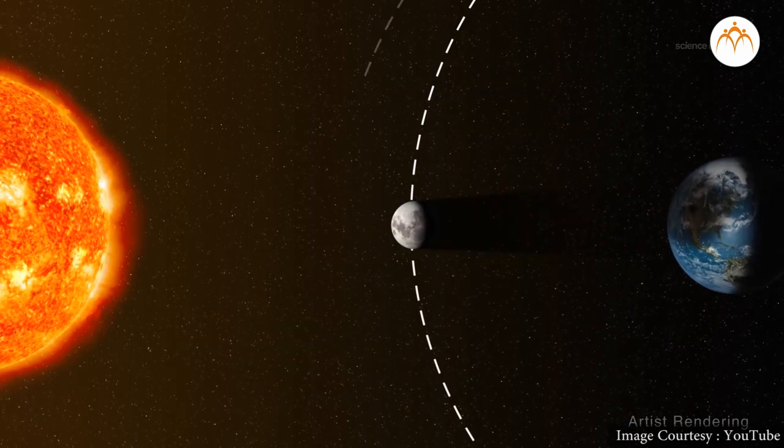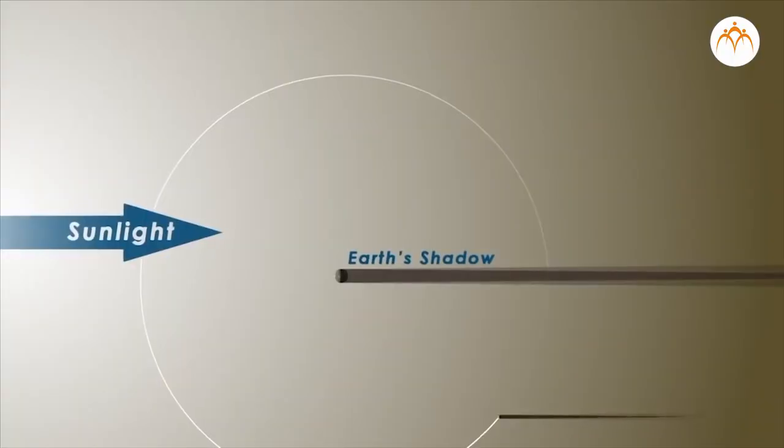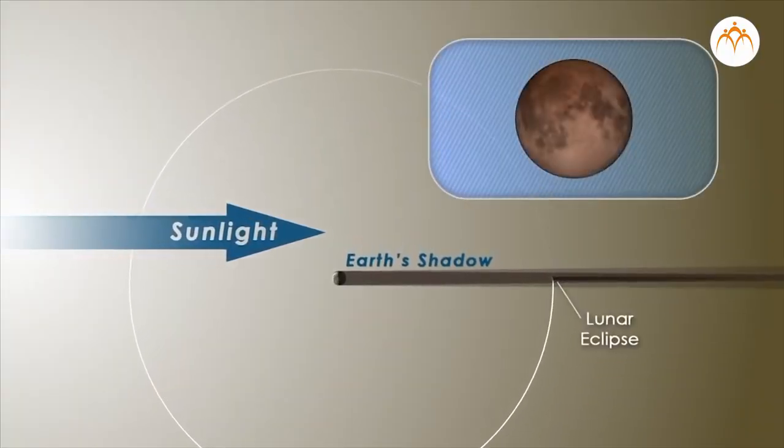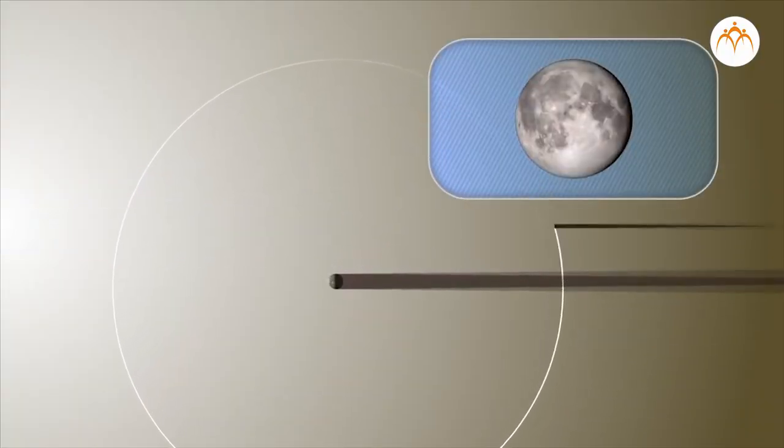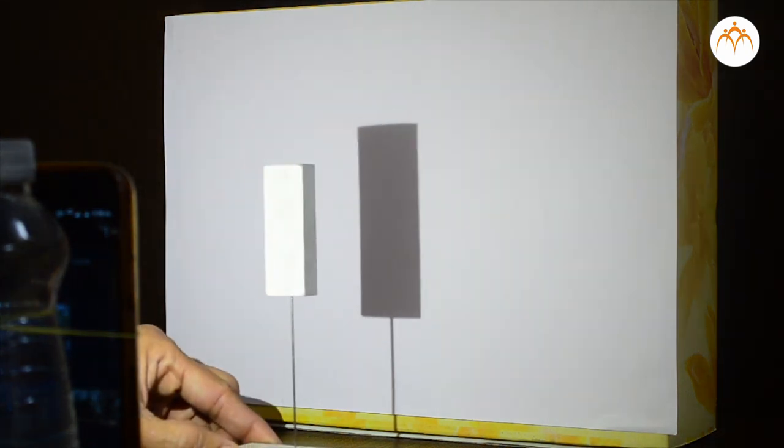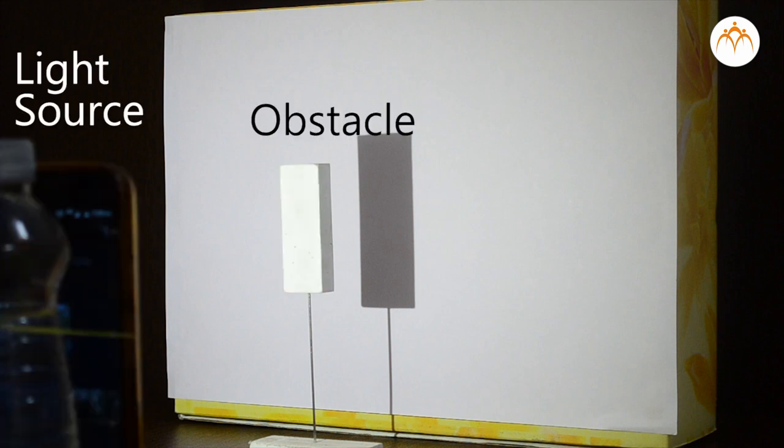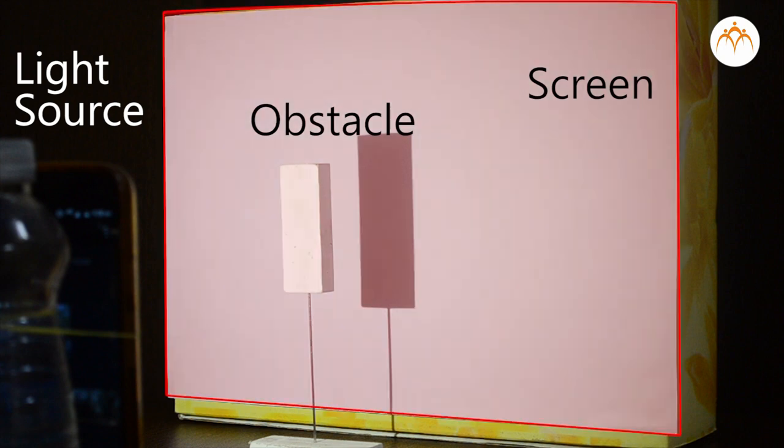These planetary objects revolve in different orbits. They are of different sizes as well. During certain times of the year they may come in one plane and align along a line. This situation is similar to what we looked at while learning about shadows. Out of three objects involved, one is light source, one is an obstacle, and one is a screen on which shadow is formed.